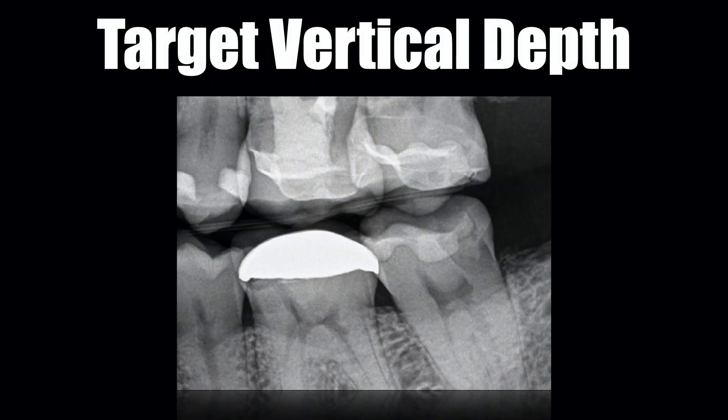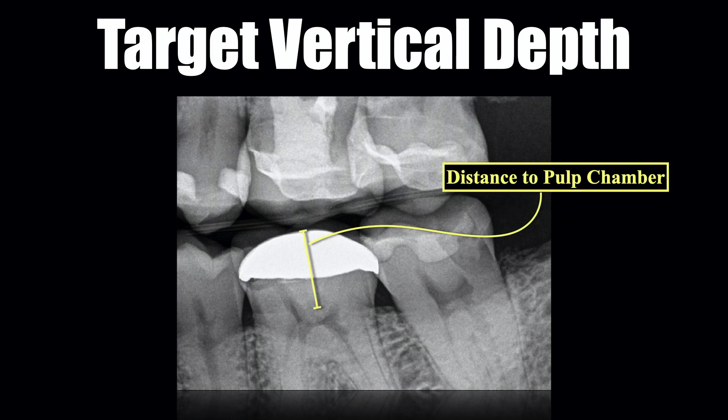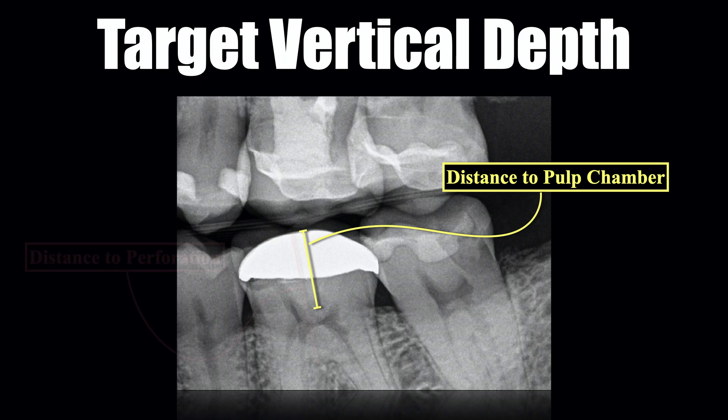I use the distance measuring tool that's embedded in my digital software and I make two measurements: the distance from the occlusal surface to the roof of the pulp chamber, and the distance from the occlusal surface to the level of furcation. The latter is really only used for molar teeth.